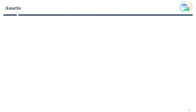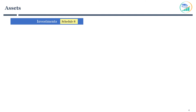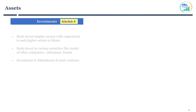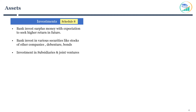Let's review other line items on the assets side. The next line item is investments. You can review Schedule 8 to understand the bank's investment details. Just like individuals, banks invest surplus money with the expectation of seeking higher returns in the future. Banks invest in various securities like stocks, debentures, and bonds. It also includes investments in subsidiaries and joint ventures.